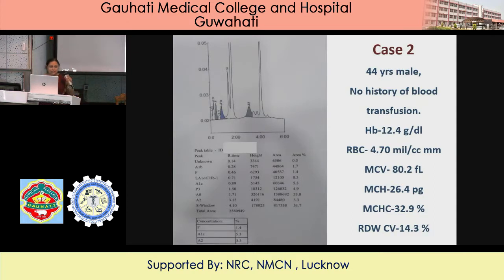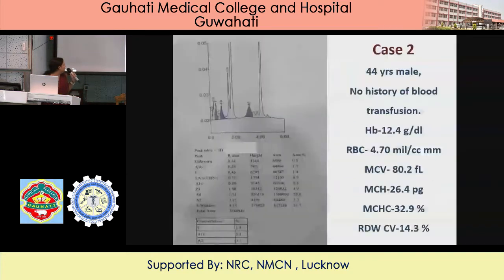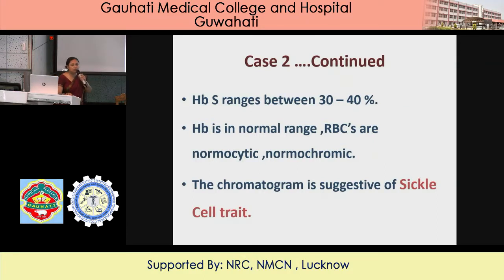Hemoglobin S ranges between 30 to 40%. In this case it is 31.7%, so it falls within that range. The hemoglobin is in the normal range, RBCs are normocytic normochromic, and the chromatogram is suggestive of sickle cell trait.